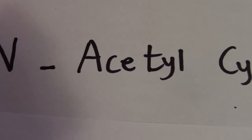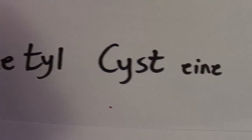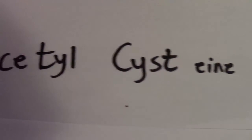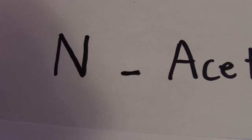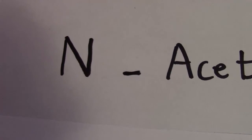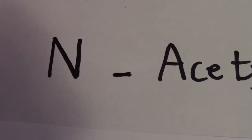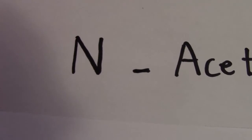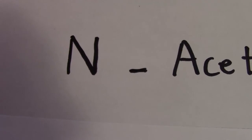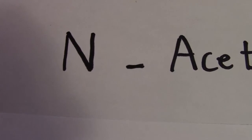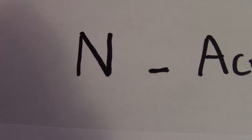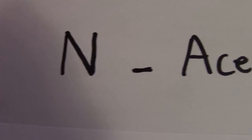N-acetyl and cysteine. Remember N as nephro — nephroprotection. N-acetylcysteine protects kidneys against contrast, so nephroprotection against contrast.